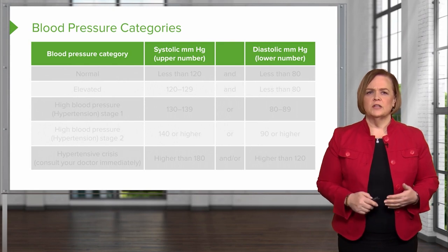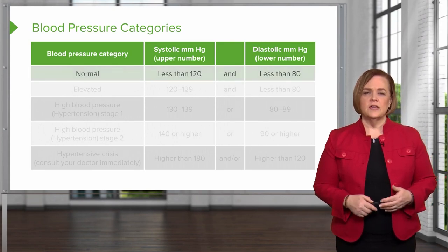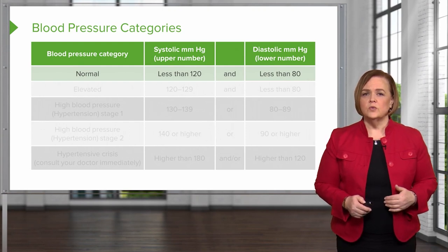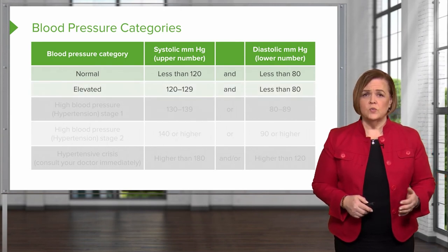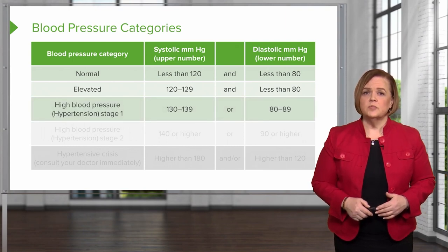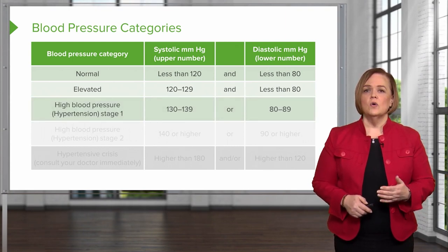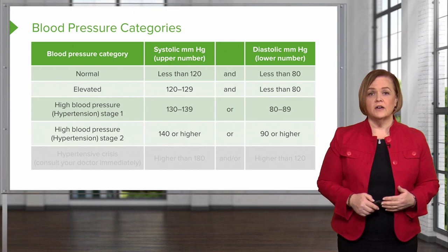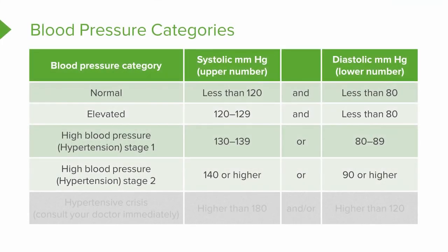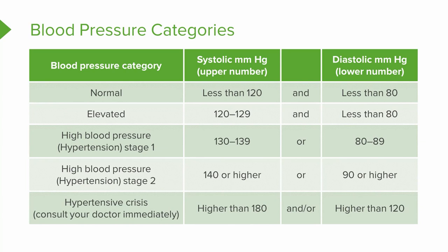Let's do a quick review of blood pressure categories. Normal is less than 120 systolic, less than 80 diastolic. You're starting to get into the elevated range when you're 120 to 129 over less than 80. Stage one hypertension is 130 to 139 or 80 to 89 diastolic. High blood pressure stage two is 140 or higher systolic, 90 or higher diastolic. We use 180 over 120 to indicate a severe hypertensive crisis — this patient is in immediate and imminent danger and needs to be at the hospital for treatment.